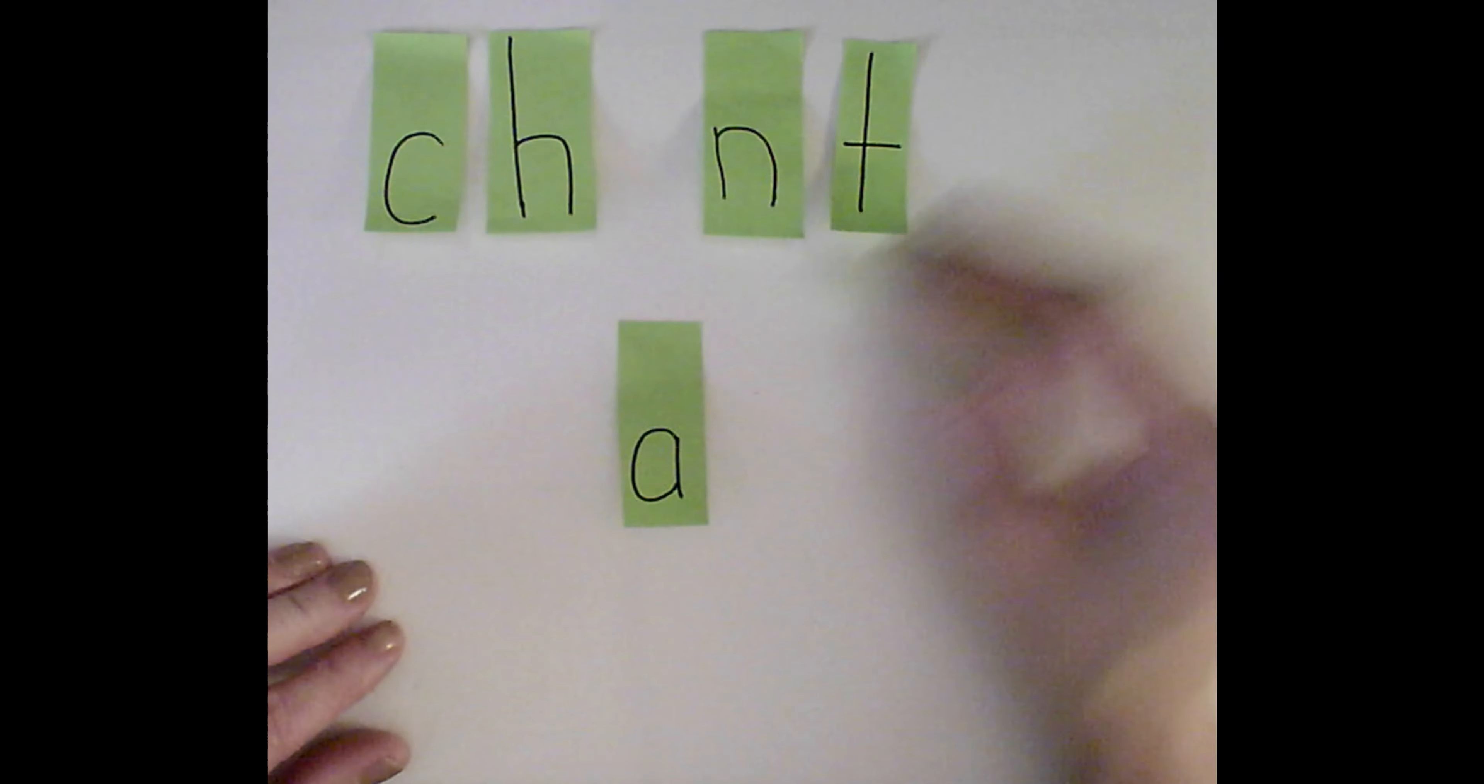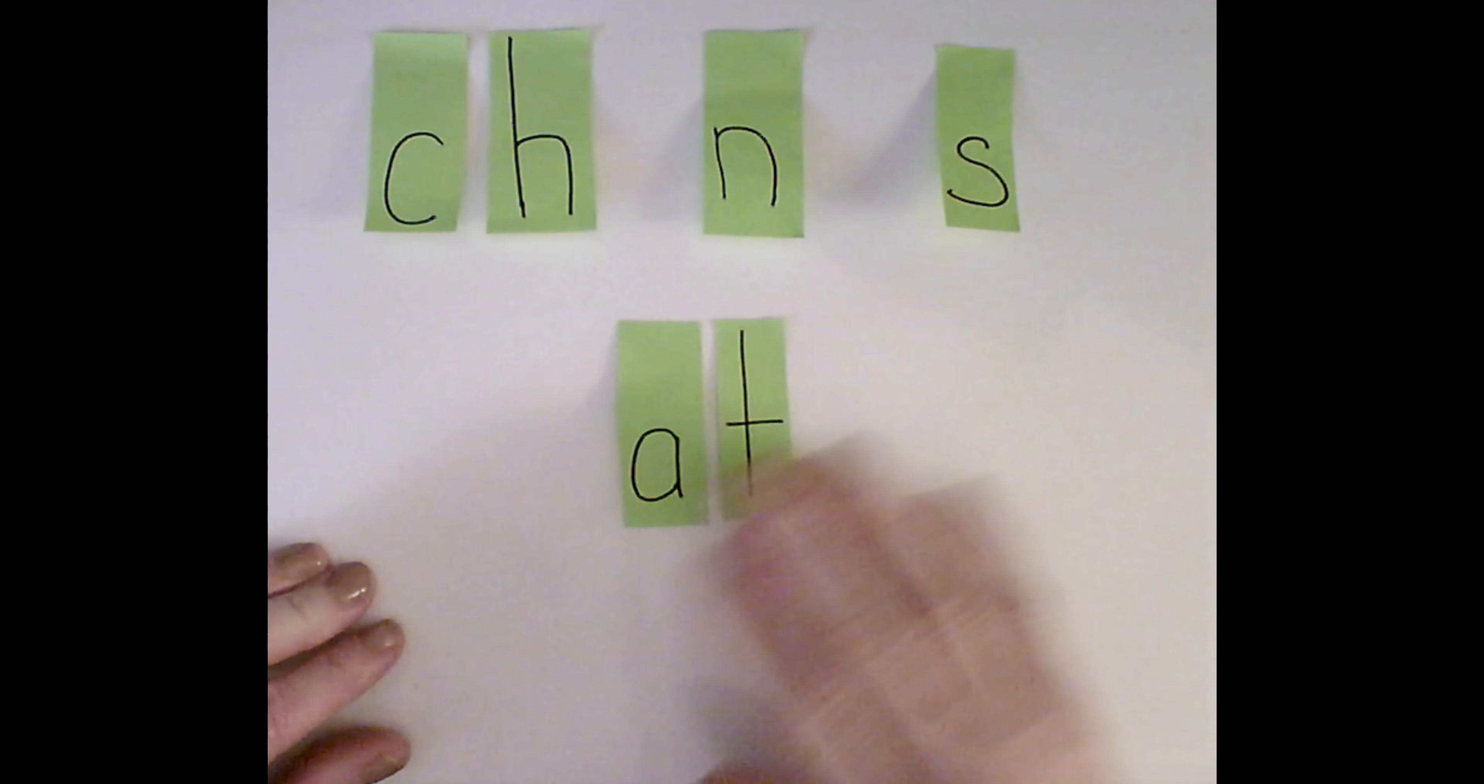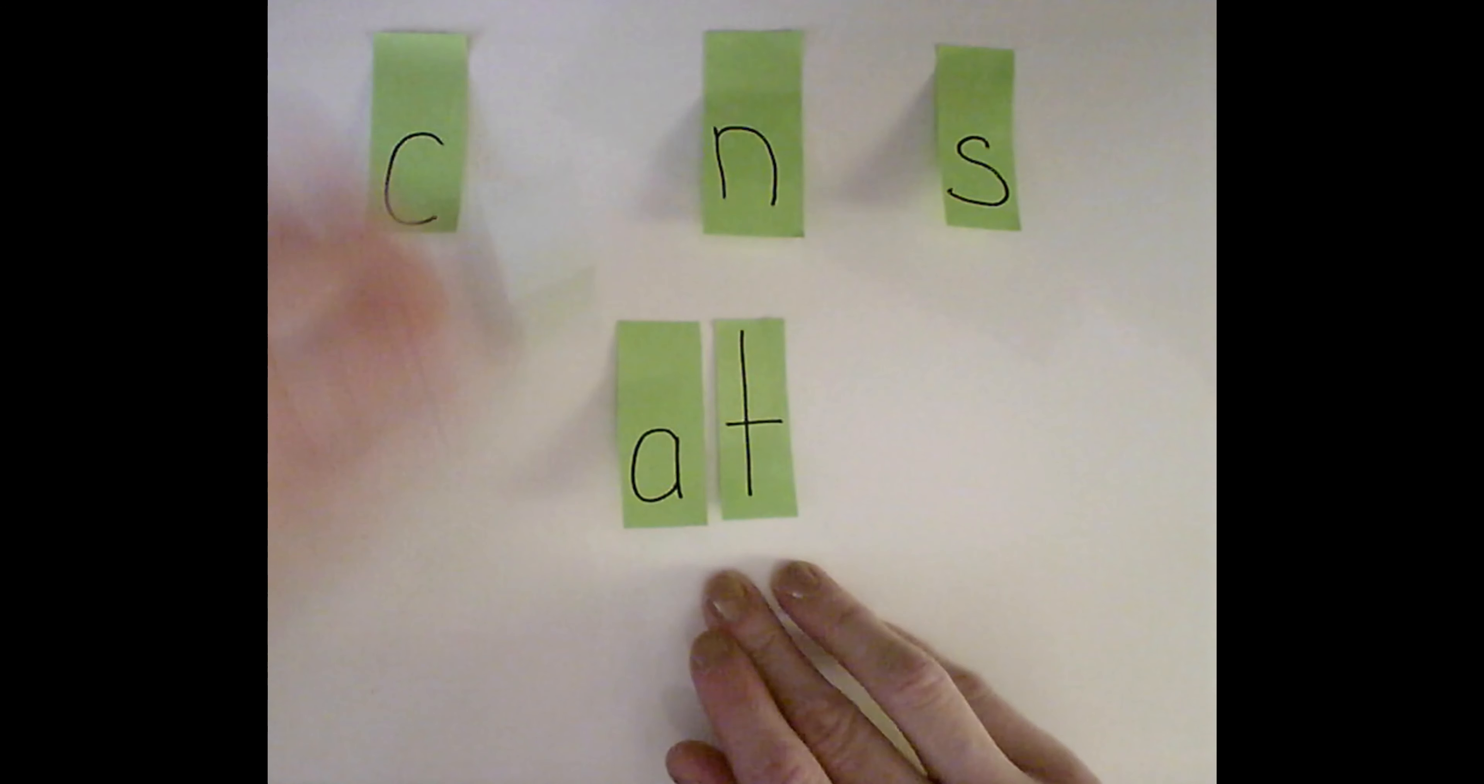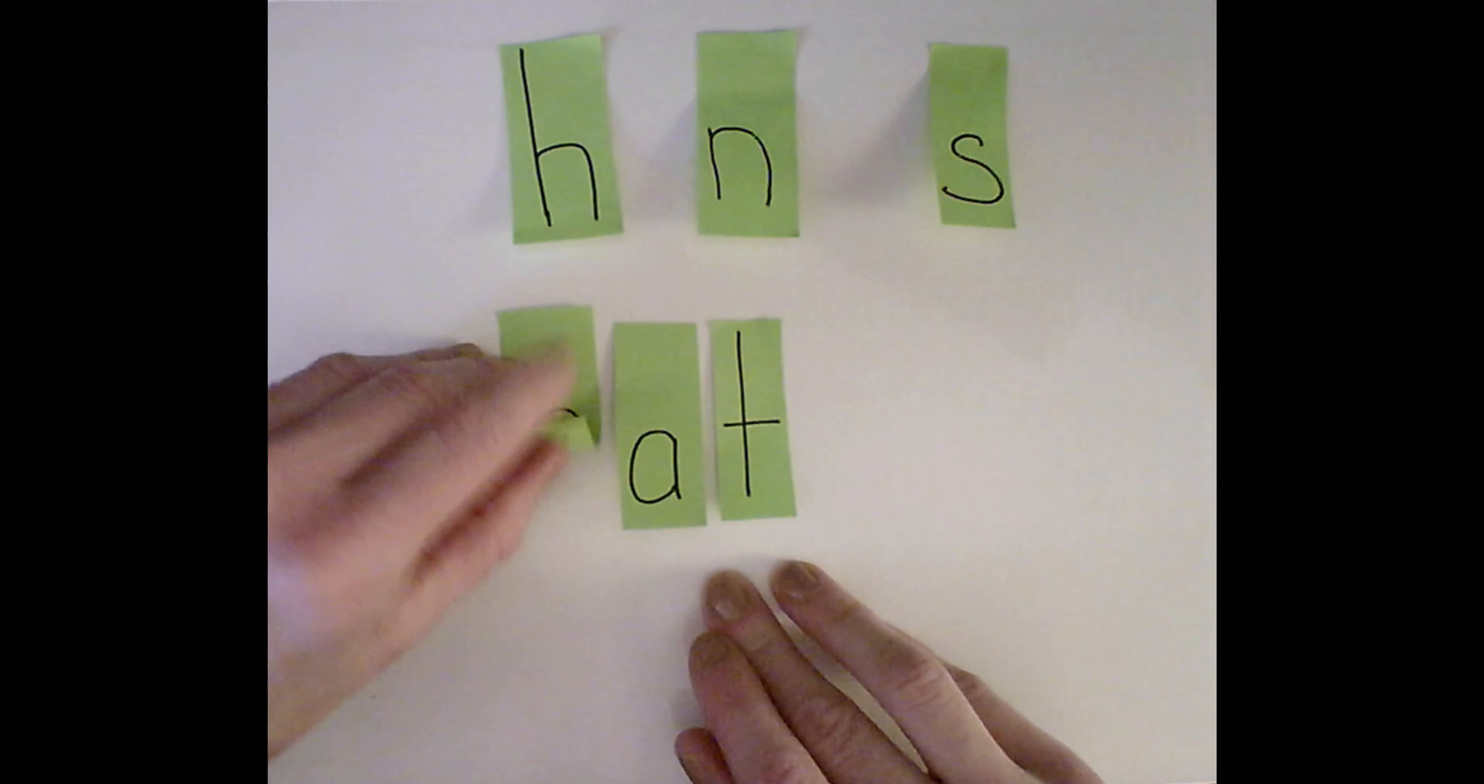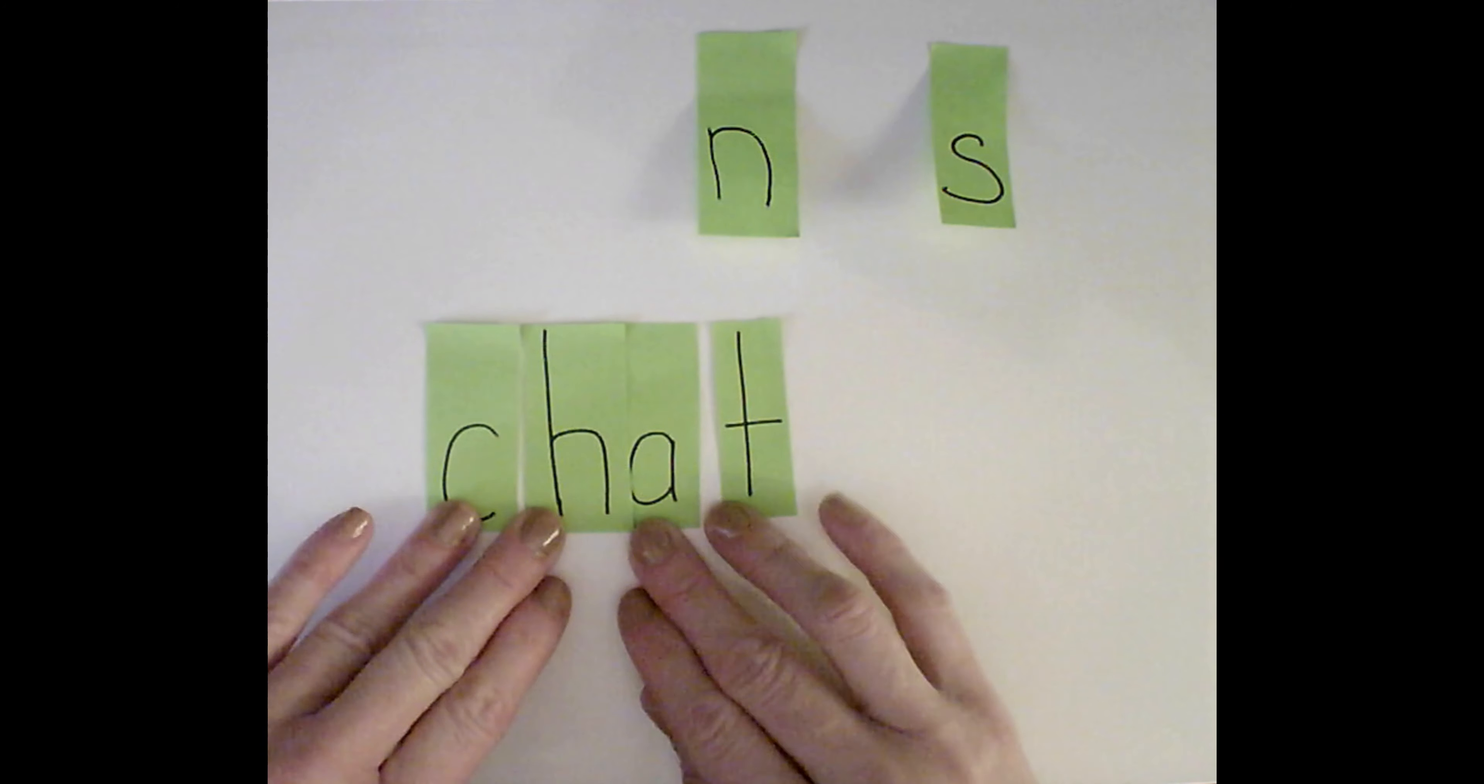I can use a word I know, like the word at, to try and help me build longer words, like pat or cat. Or I can use my blend sounds to make the word chat.